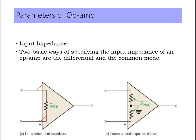In the case of common mode input impedance, both input terminals have the same voltage because a common input signal is applied. Therefore, the resistance is measured from each input terminal to ground — that is, between each input terminal and ground. This is called common mode input impedance.